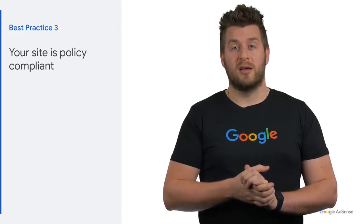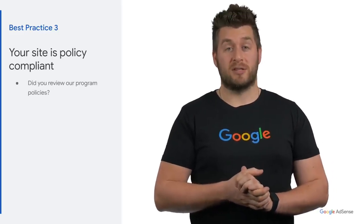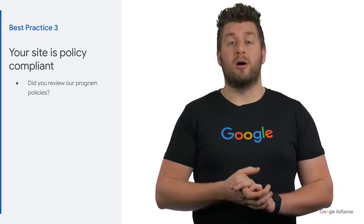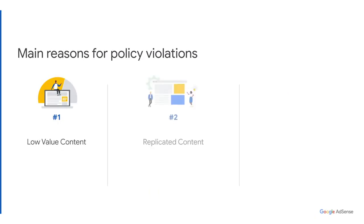The final best practice is to make sure your site is policy compliant. Please review our program policies and content policies in particular. We've observed three main violations by our publishers. The first violation is low-value content — make sure the content is original and valuable to your users. The second violation is having replicated content. Ensure that your content is unique and not repetitive on different pages of your site. When the same content is found replicated on your pages or on other sites, your site won't be approved.